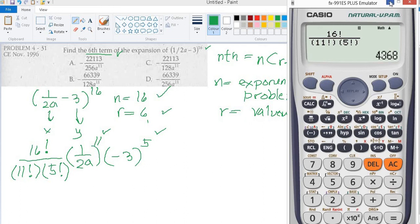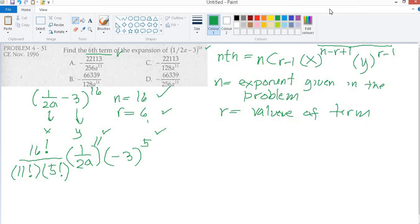So this will become 1 raised to 11 over 2 raised to 11, that's a raised to 11, quantity negative 3 raised to 5.